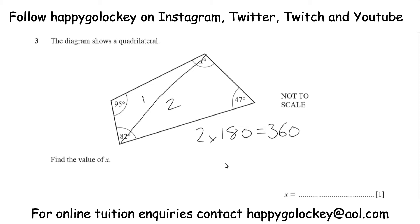So far we've already got 95, we've got 82, and we've got 47. So let's add those together and see what's missing.